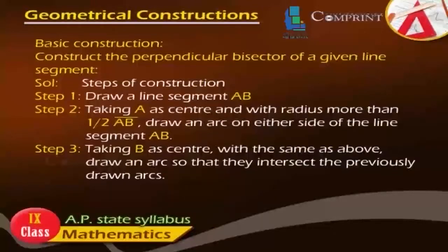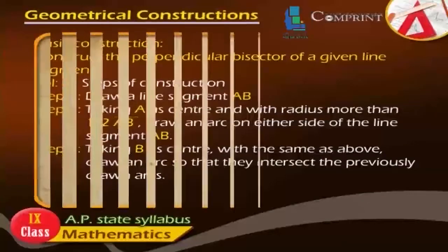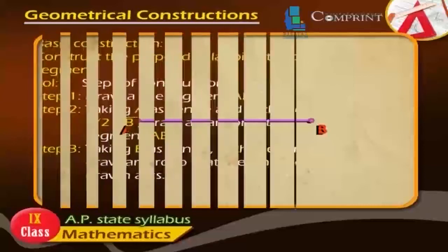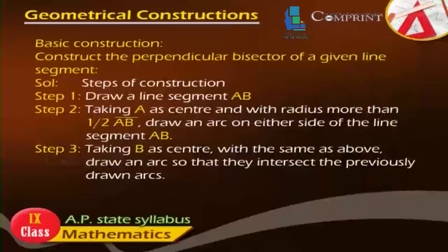Basic Construction: Construct the perpendicular bisector of a given line segment. Steps of Construction. Step 1: Draw line segment AB. Step 2: Taking A as center and with radius more than half of line AB, draw an arc on either side of the line segment AB.